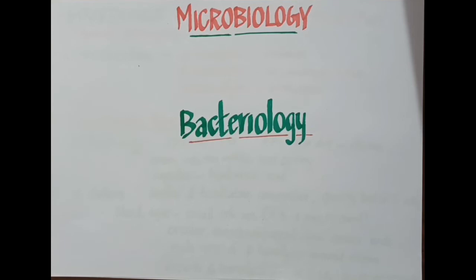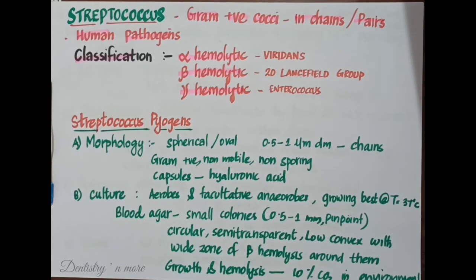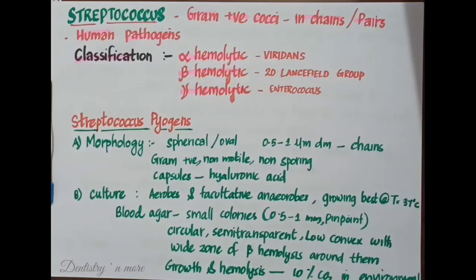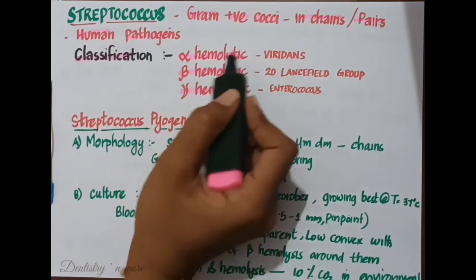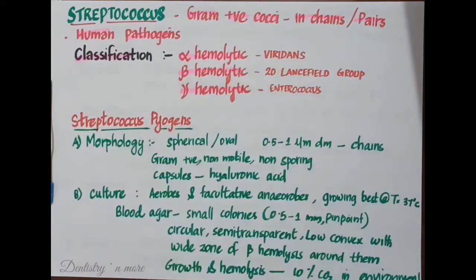We are continuing with the bacteriology section. Today let's see in detail about various groups of bacteria, specifically Streptococcus. The most frequently asked questions are to describe in detail about Streptococcus pyogenes, Streptococcus viridans, and group D Streptococcus. Generally, Streptococcus are gram-positive cocci seen in chains or pairs. They are human pathogens classified into alpha hemolytic, beta hemolytic, and gamma hemolytic categories.